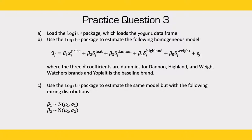For the last practice question, use the yogurt dataset — which loads with the logitr package — and estimate two models. The first is a homogeneous model with fixed parameters: price as a continuous variable, 'feat' (whether the yogurt was featured), and three brand dummy coefficients for Dannon, Hiland, and Weight Watchers, with Yoplait as the dummied-out level. Once done, estimate a second model using a mixed logit with the following mixing distributions, where beta 1 and beta 2 are both normally distributed.